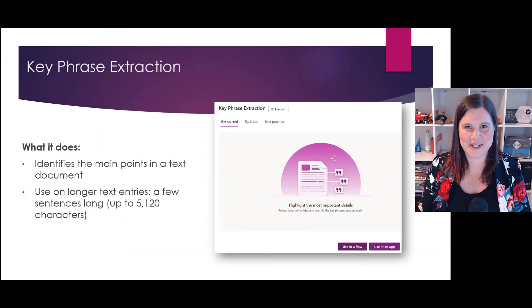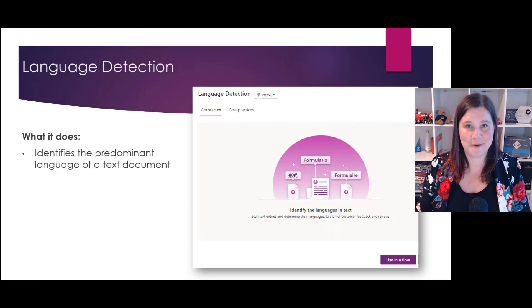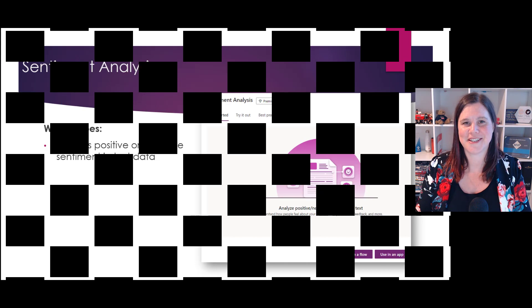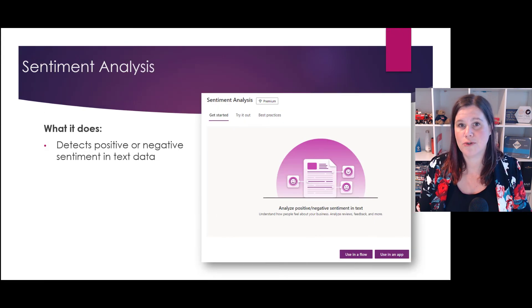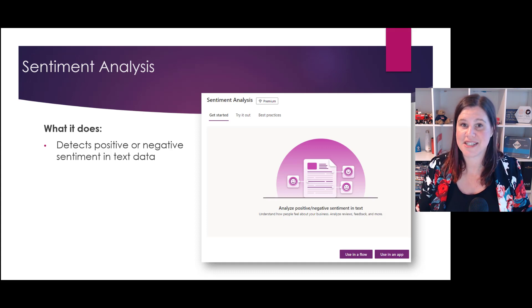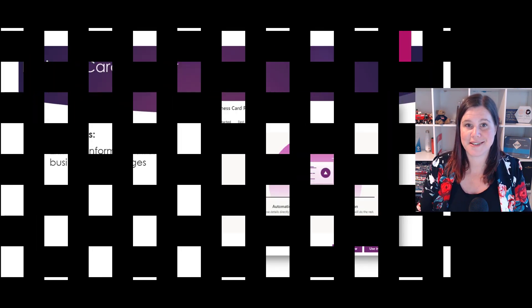Key phrase extraction does pretty much what it says — it goes through your text and extracts the keywords, and you can put that into a text field as a list of key phrases. Language detection identifies what language the text is. Sentiment analysis identifies the sentiment in your text — you'll get an overall positive, neutral, or negative rating, as well as the percentage likelihood of accuracy, and it can also go down to sentence level.